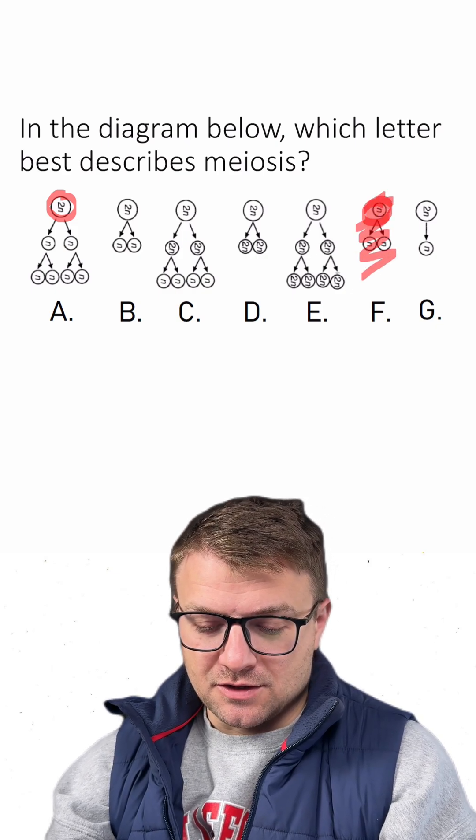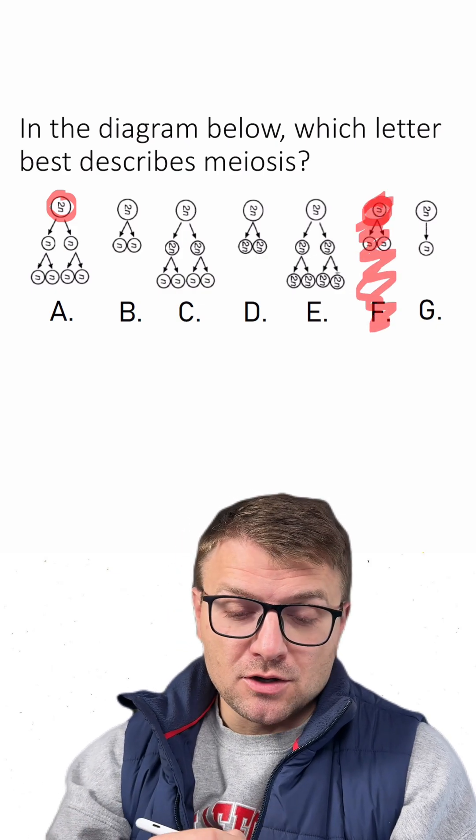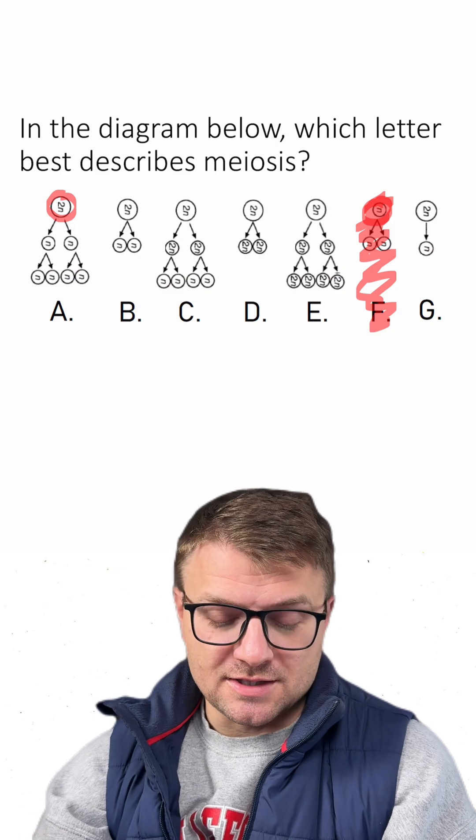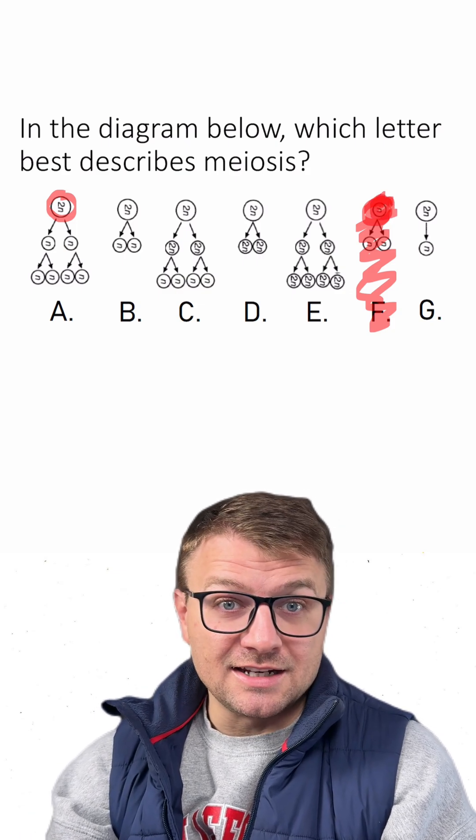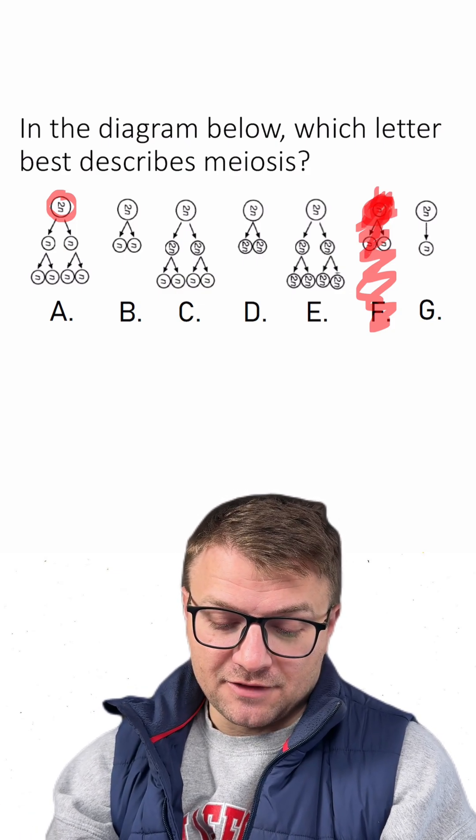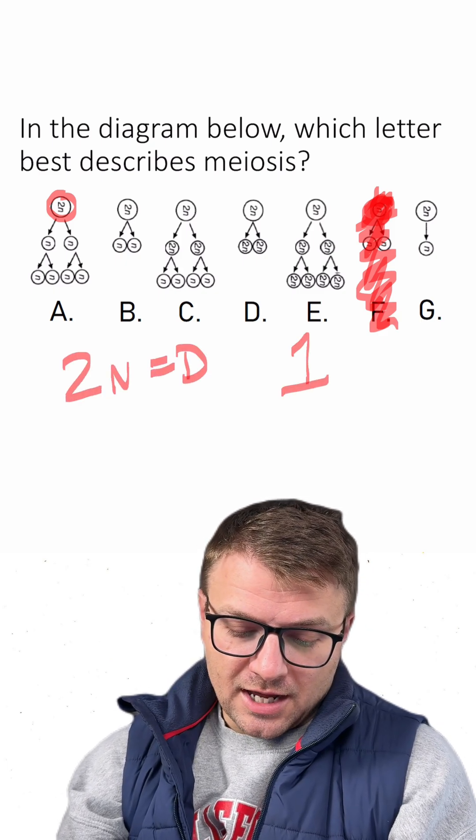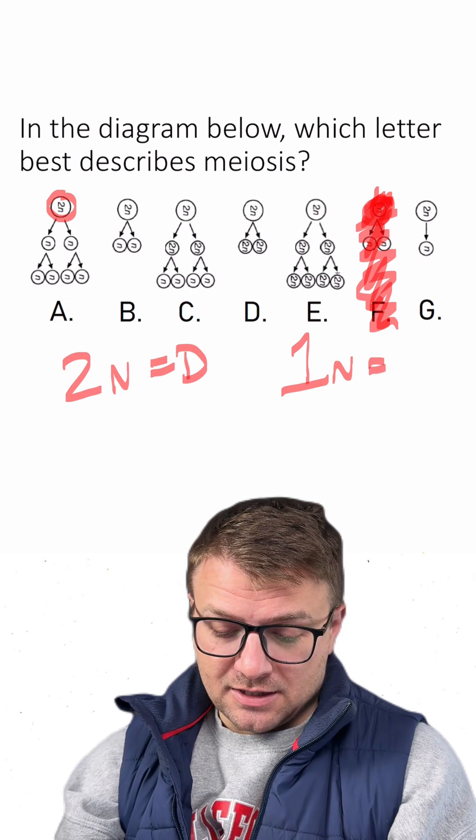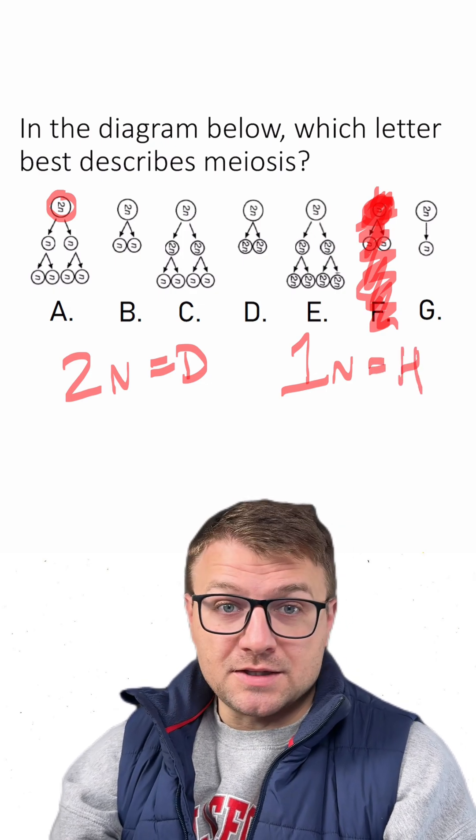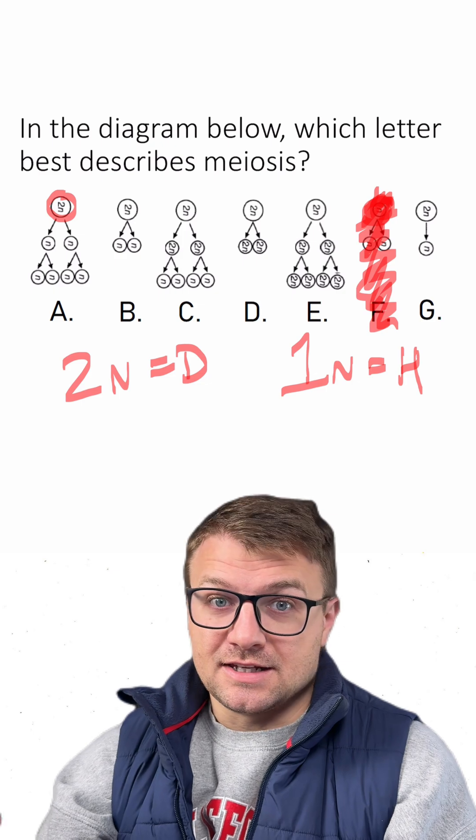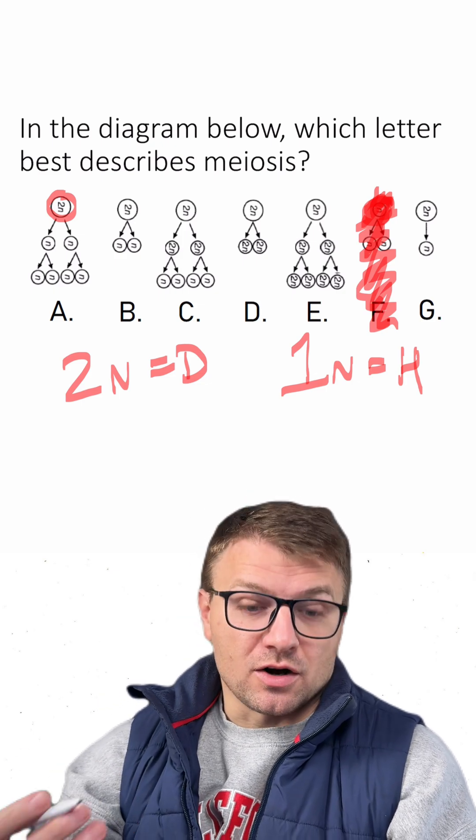And we can automatically scratch this one out because both mitosis and meiosis start out with a diploid cell. This one here only having N is a haploid cell, so that means F can't be our answer. Remember that 2N is diploid while 1N or just regular N is haploid. And this just basically means how much DNA is in that cell or how many chromosomes are in that cell.